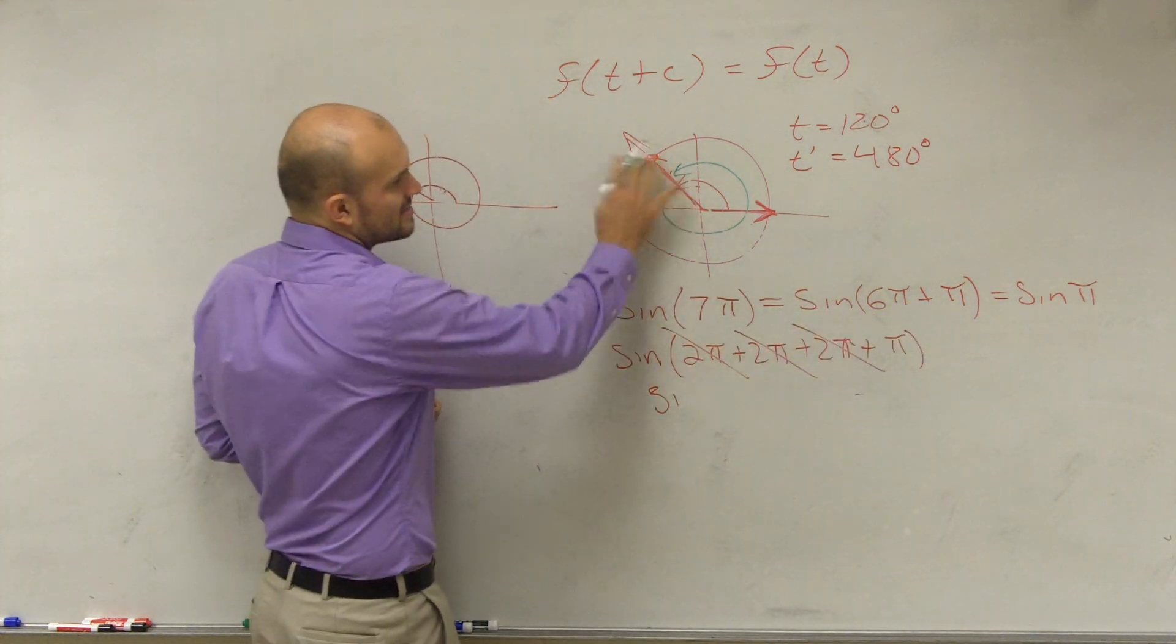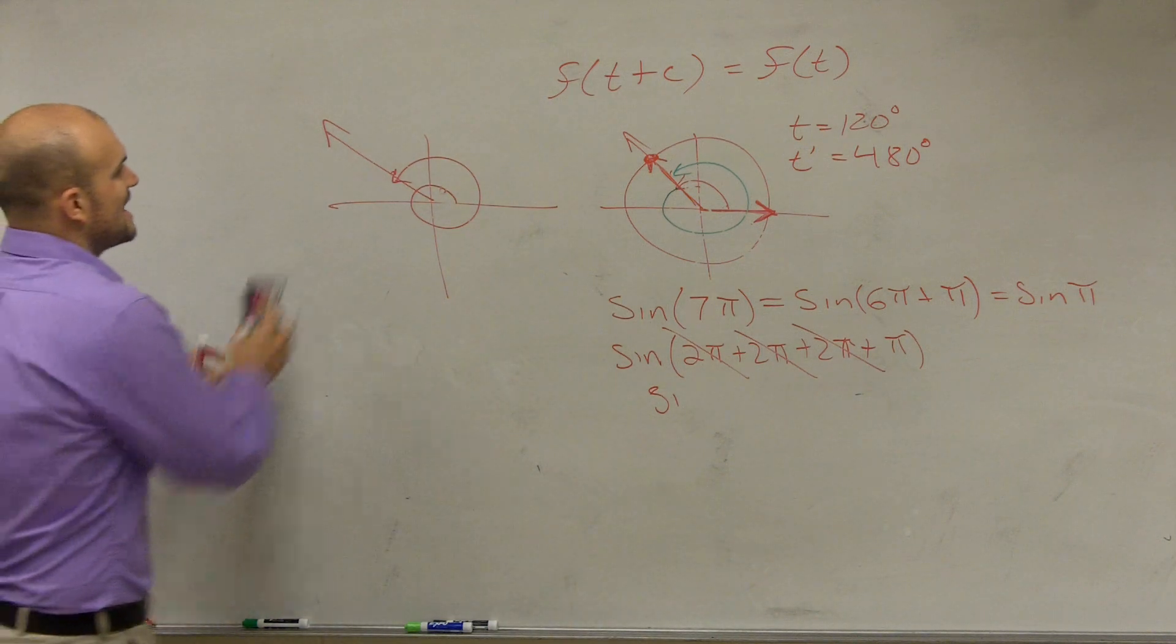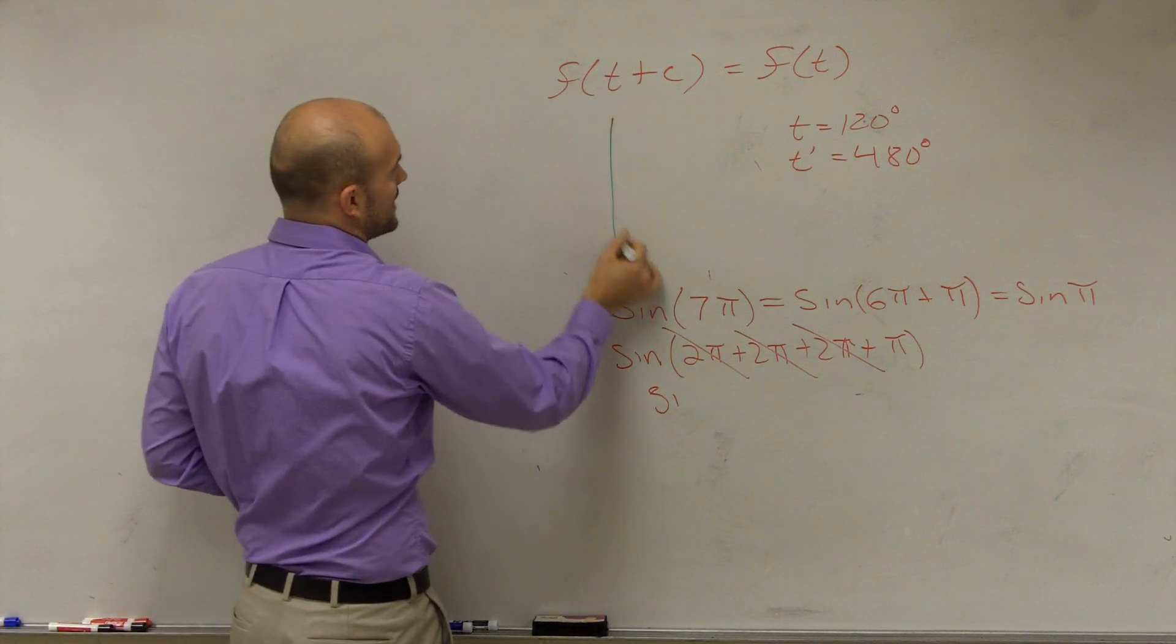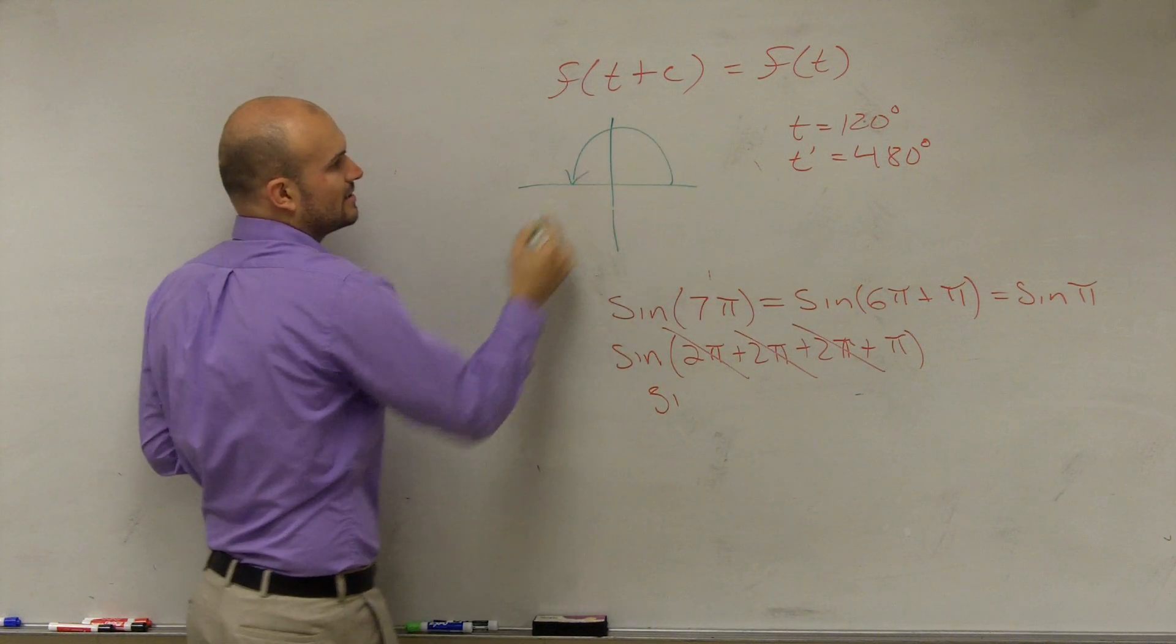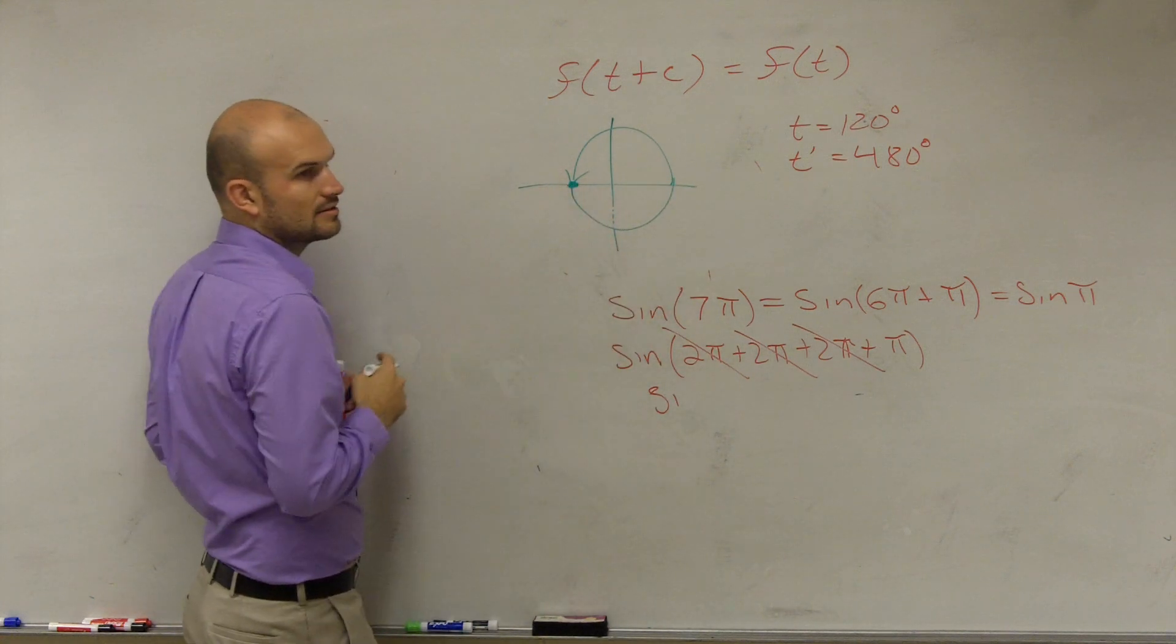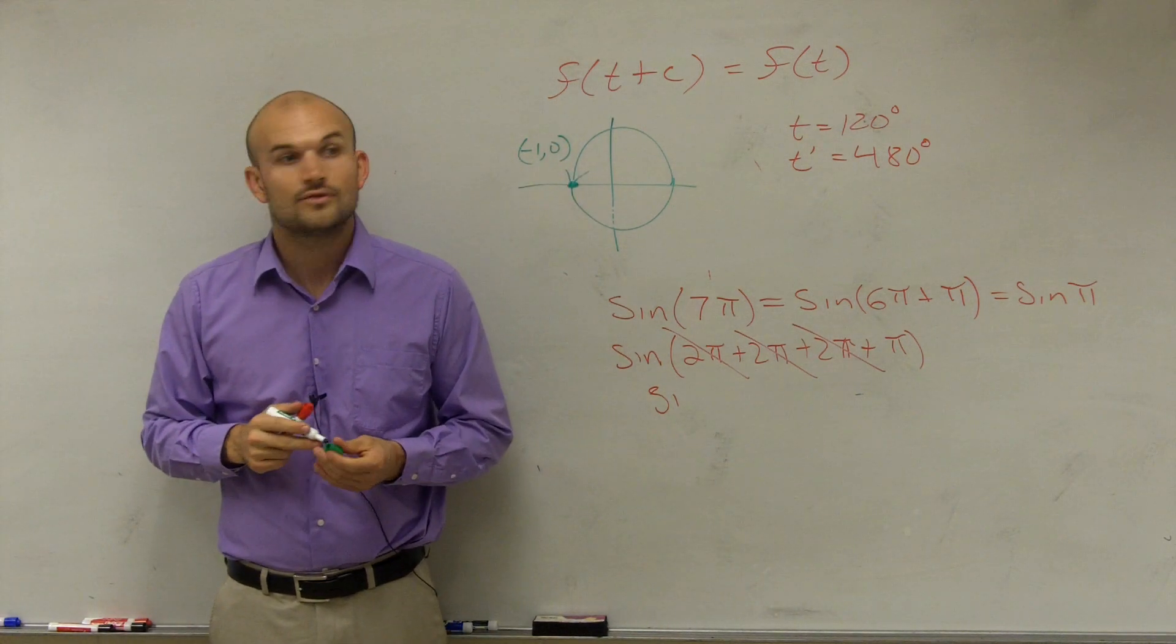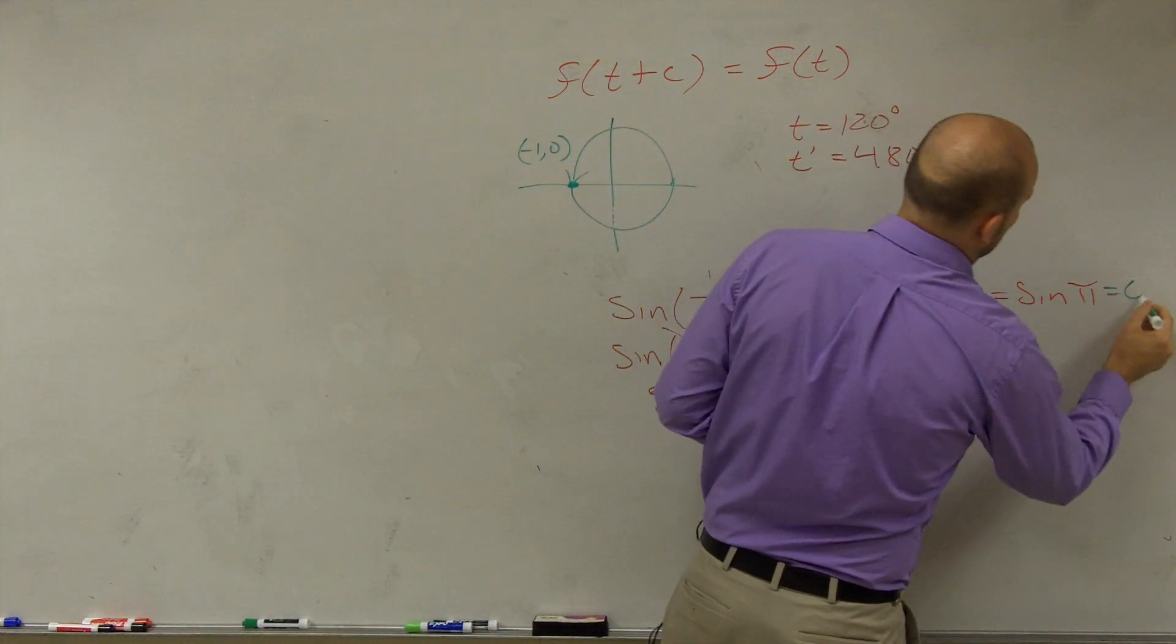How can I evaluate sine of π? The first thing you need to do is graph it. π radians is going to be right there. When looking at the unit circle, what is this point? Negative 1, comma 0. And sine always relates to which coordinate? The y. So therefore, sine of π equals 0.